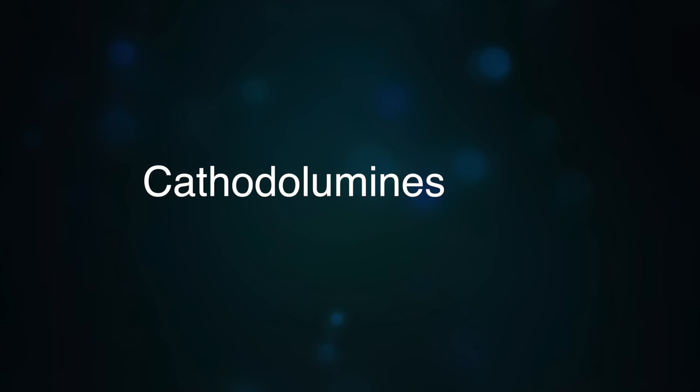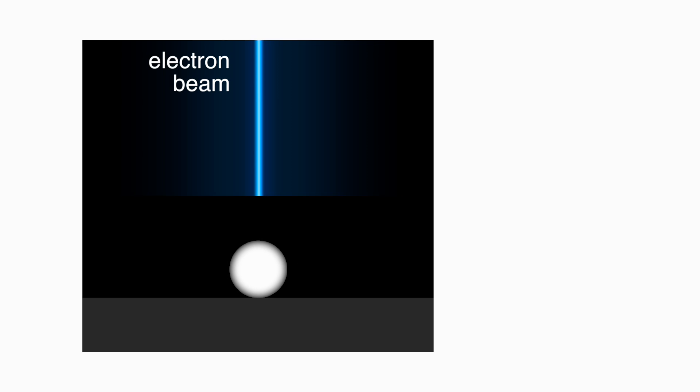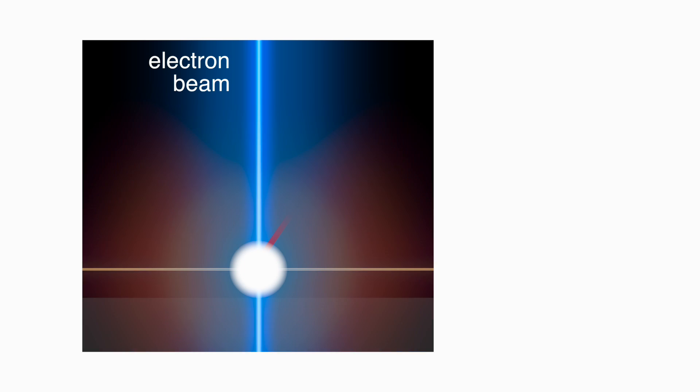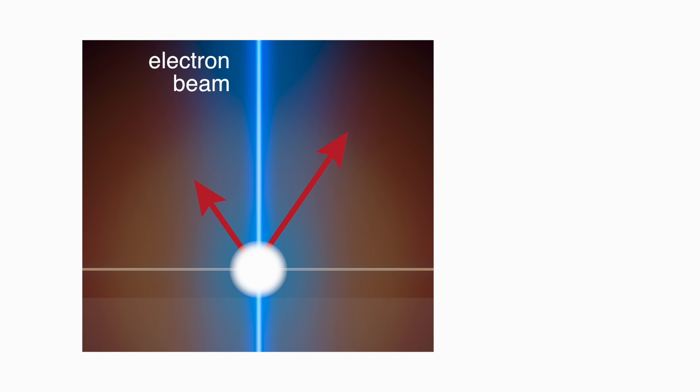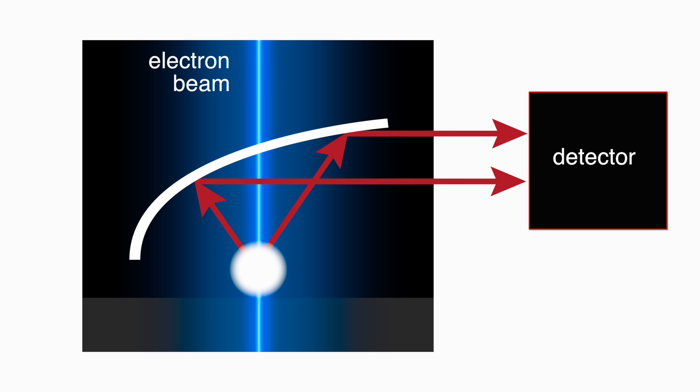The technique we use is called cathodoluminescence. If we take a nanoparticle in an electron microscope and shine a beam of electrons at it, it can actually emit light. This light is called cathodoluminescence. Now, if we collect this emitted light, we can map out the optical properties of the object with nanometer scale resolution.